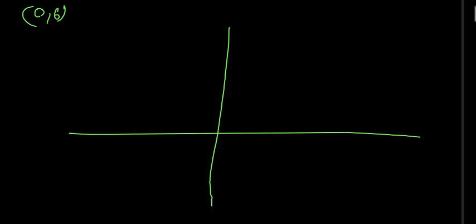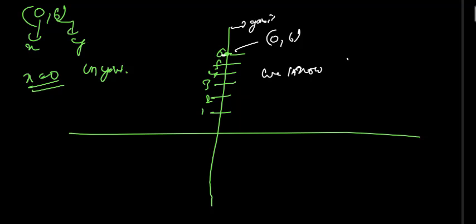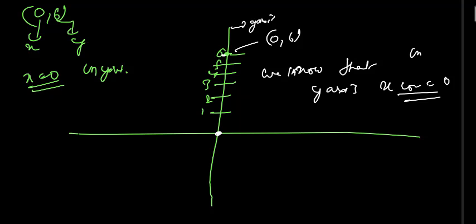Similarly, for point (0, 6): X is 0, Y is 6. X equal to 0 means on the Y axis. We know that on the Y axis, the X coordinate is 0. So go 1, 2, 3, 4, 5, 6 on the Y axis — the point (0, 6) lies on the Y axis.